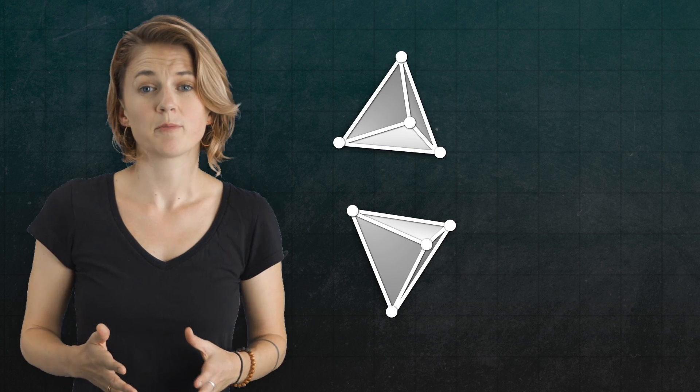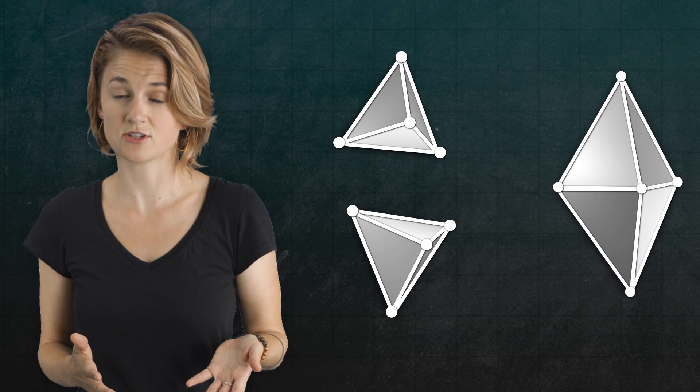The individual simplices can be completely separate, like these pieces, or they can be stuck together by sharing a face, like these tetrahedra, or an edge, like this triangle and tetrahedron,